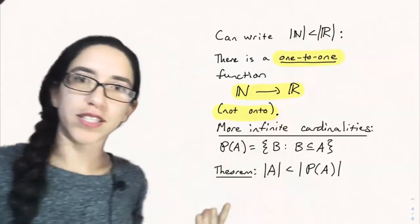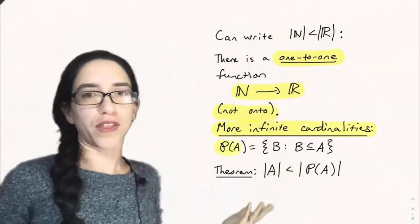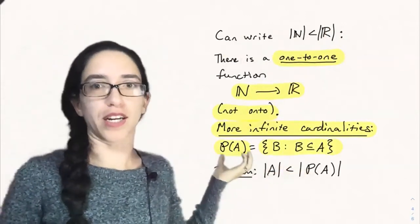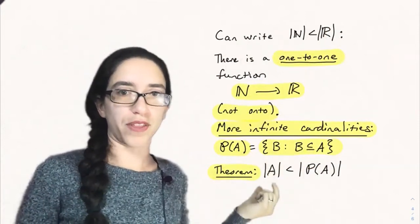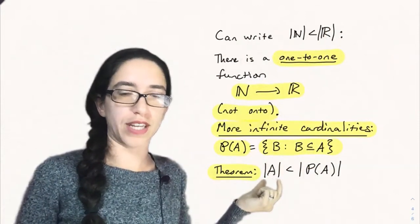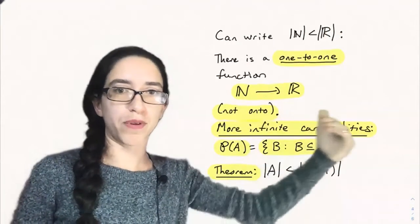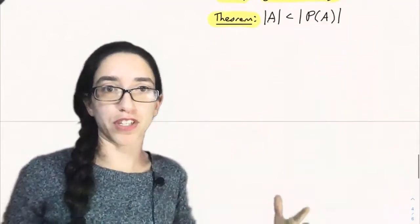So this allows us to generate more infinite cardinalities with a theorem that's rather hard to prove. We're not going to do it in this video. But if you take the power set of a set to be the set of all subsets of that set, it turns out that the size of a set A is always less than the size of its power set. So you can use this to keep constructing bigger and bigger sets of infinite sizes by just keeping taking power sets.